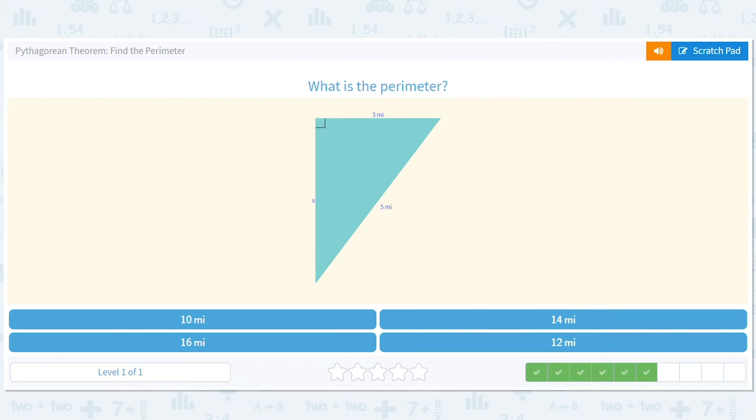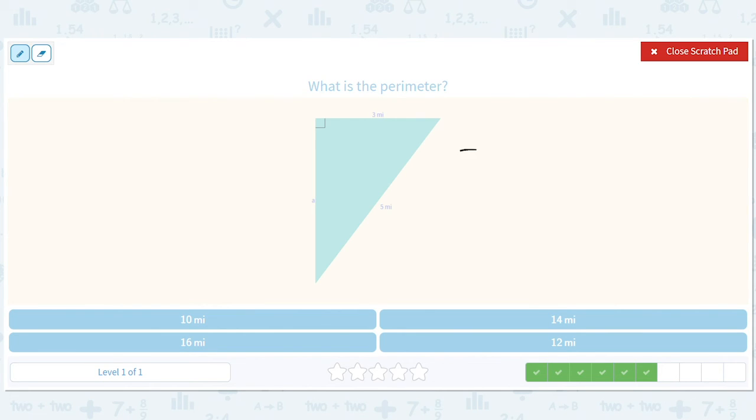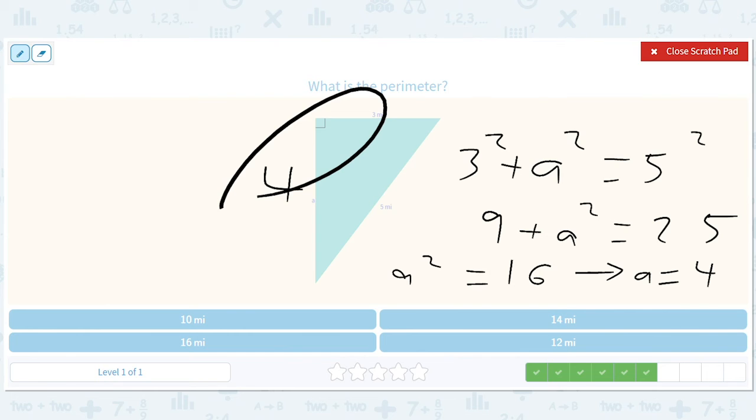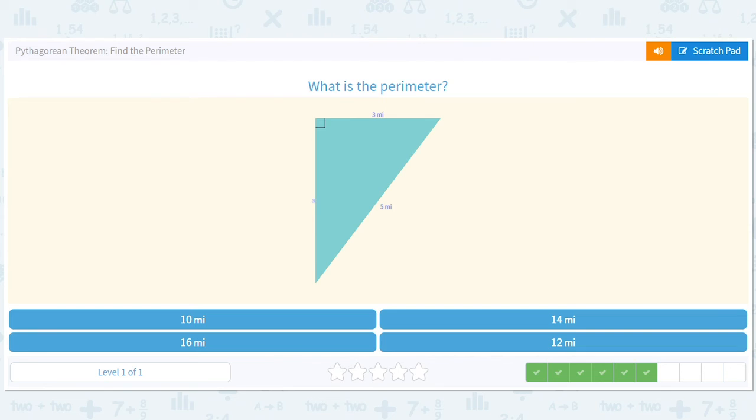Okay, cool. This is a 3-4-5. But what is it? It's 3 squared plus a squared, or a squared plus 3 squared, same thing, equals 5 squared. So we get 9 plus a squared equals 25. a squared equals 16, so a equals 4. So that's 4. 3 plus 4 is 7, 7 plus 5 is 12, so 12 miles.